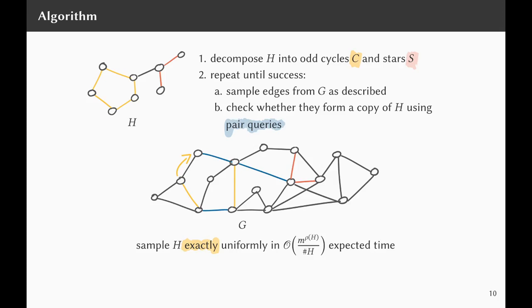To wrap up, here is the algorithm again: first we decompose H into an edge cover by odd cycles and stars, then we repeat the following until success — we sample edges from G as just described, then check whether they form a copy of H using pair queries for the remaining edges. Thanks for watching.